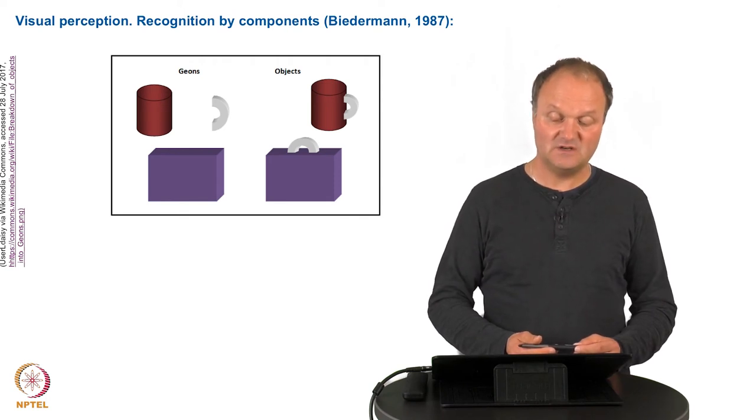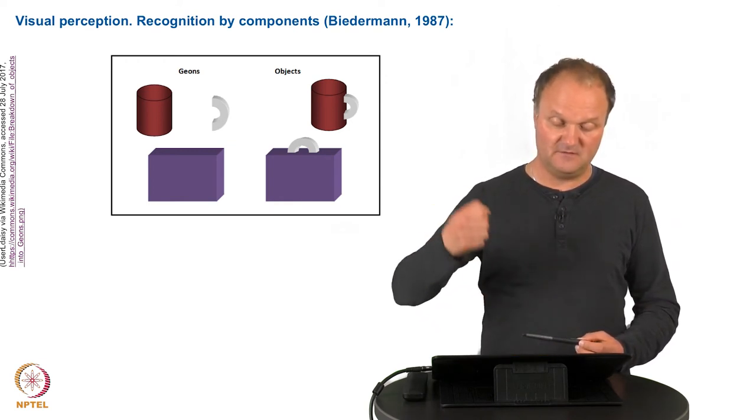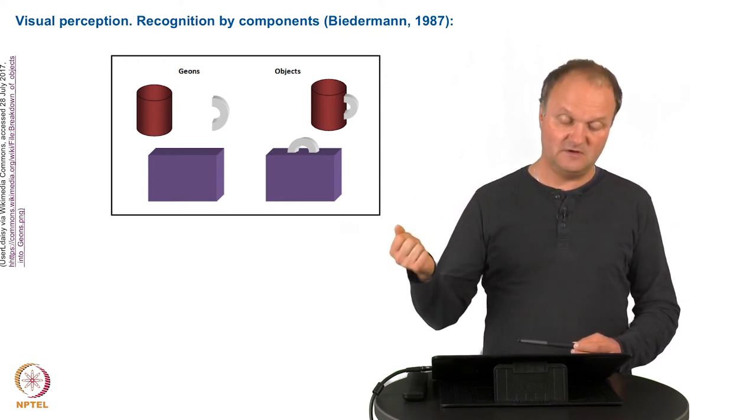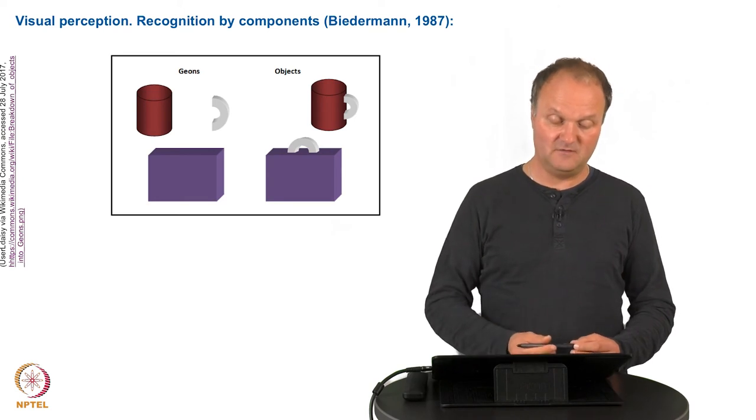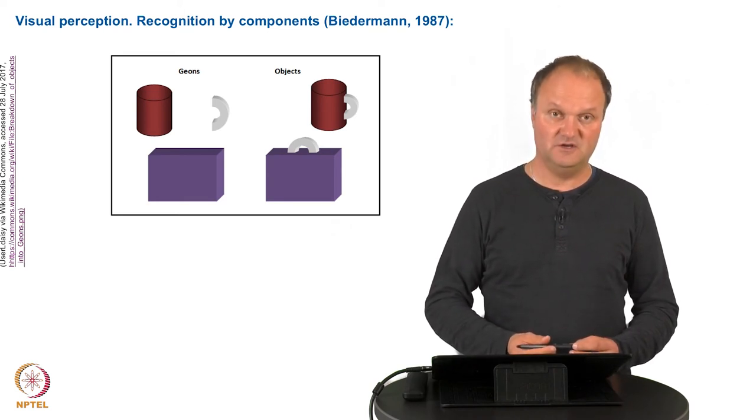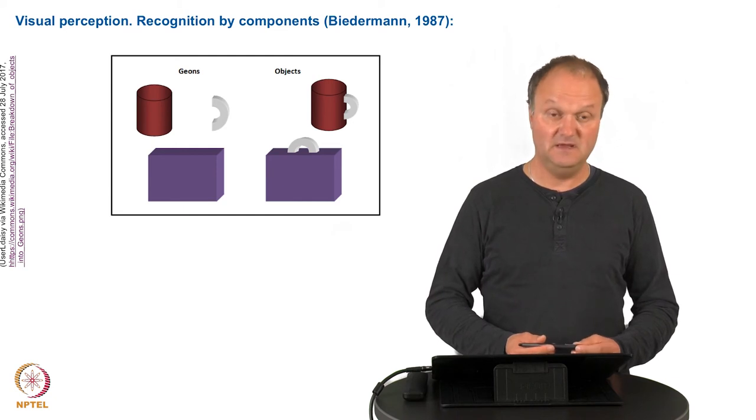There are also relations between these geons which matter. For example, where you put this kind of handle to either the suitcase or to the cup is of course very important in order to describe what that object might mean.